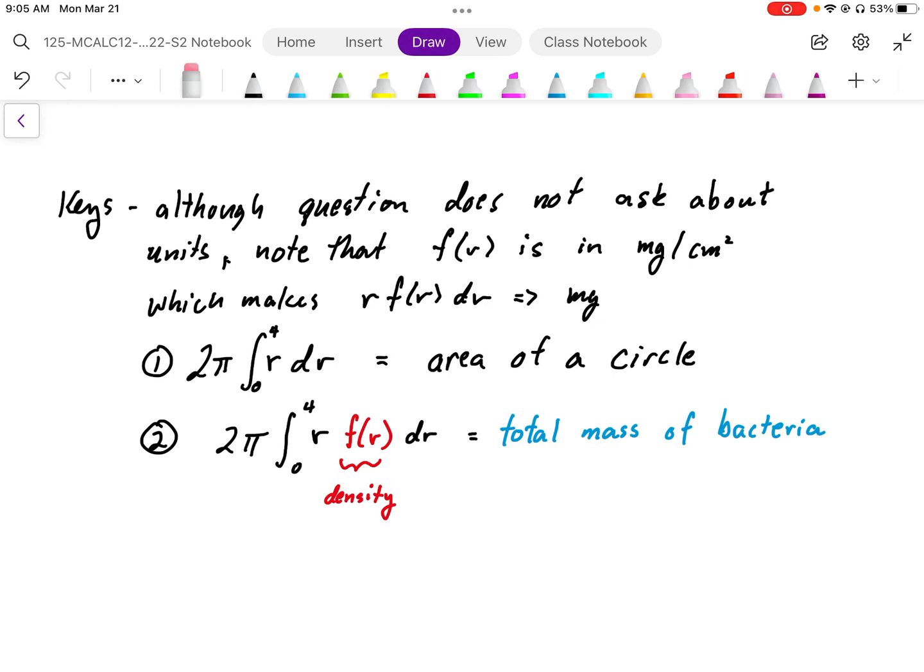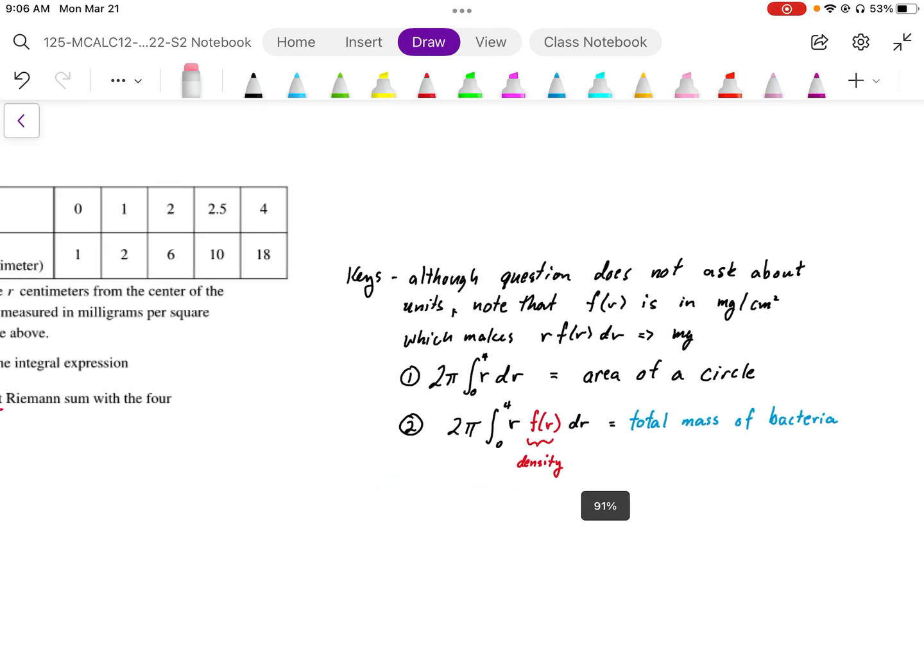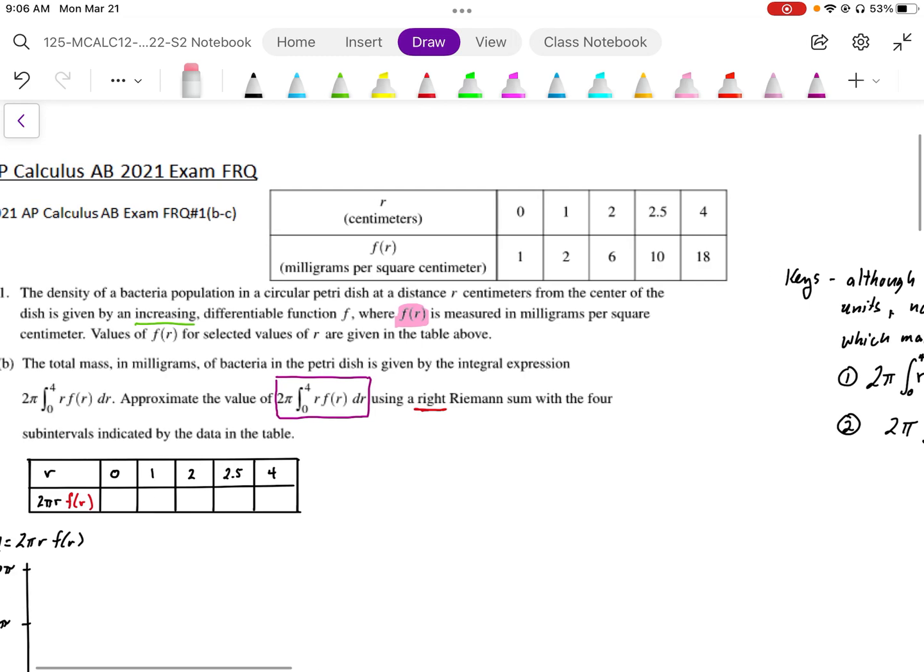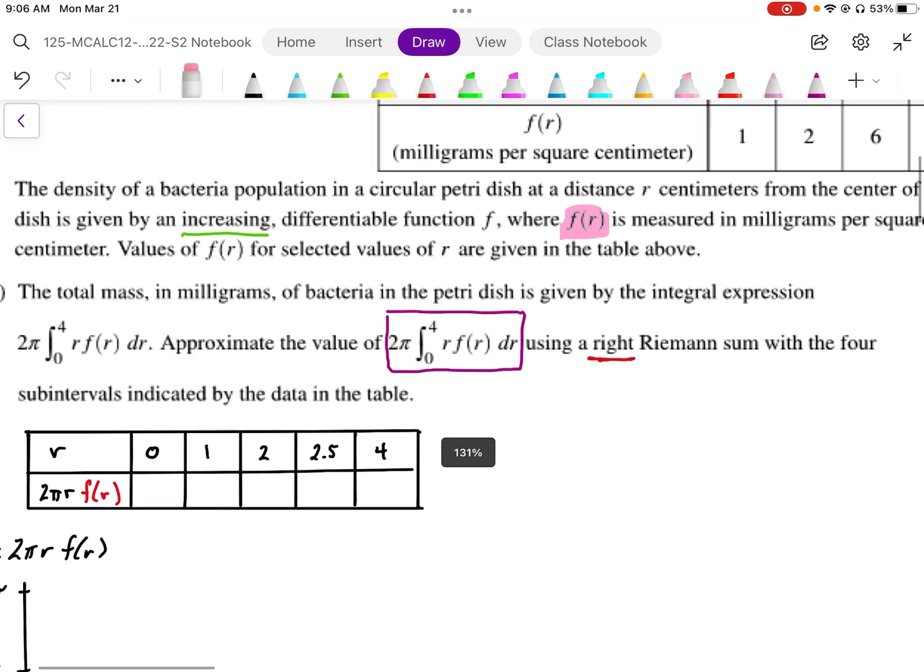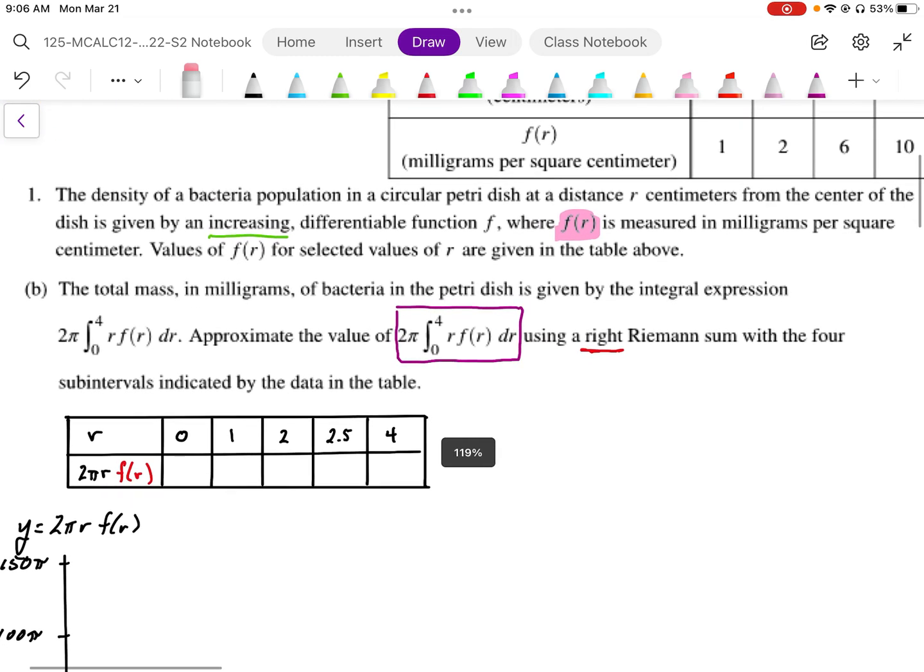If I multiply those area units by the density f(r), that's going to give us the total mass of bacteria. So integrating 2π r f(r) dr gives us the total mass of bacteria. That's what we're looking for then.